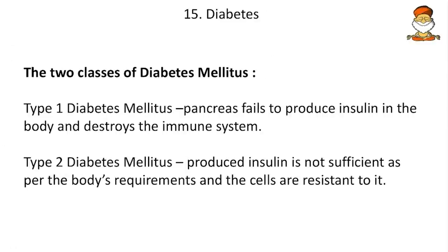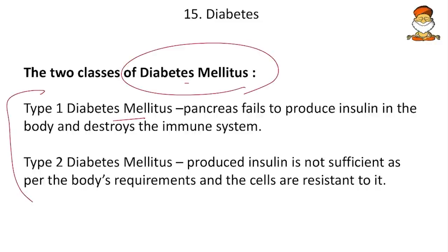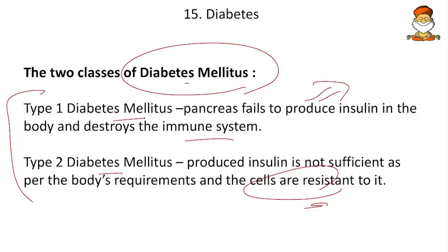Diabetes: there are two types — diabetes incipidus and diabetes mellitus. Diabetes mellitus involves lack of insulin and has two subtypes. In Type 1, the pancreas fails to produce insulin, destroying the immune system — if insulin is not administered, there may be complications or death. In Type 2, the insulin produced is insufficient and/or the body cells are resistant to it, so glucose levels do not come down inside cells. The pancreas has two hormones — insulin and glucagon — and enzymes are different from hormones.